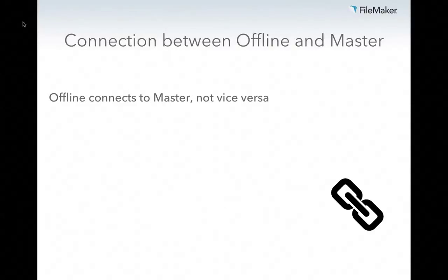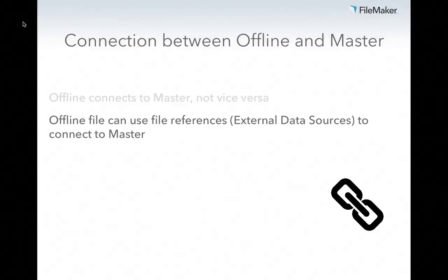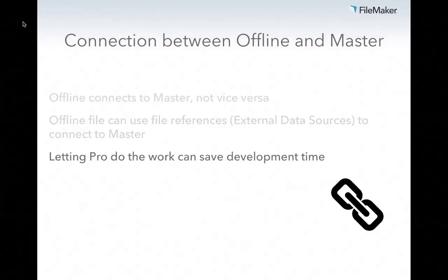In dealing with the connection between offline and master: offline is probably always going to connect to the master and not vice versa. Offline files can use file references or external data sources in FileMaker to connect to a master. And letting FileMaker Pro do the work can save you a lot of development time, so if that works for your scenario, I'd say do that.